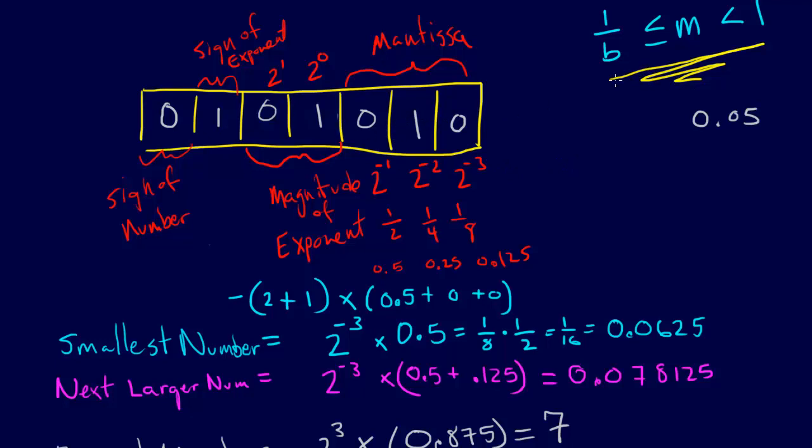And what happens as we keep doing this is the best we're going to get is going to be this value that we showed before. You just keep going through this process of bumping the mantissa up 1, and bumping up the exponent up 1, until you get to a number such that the magnitude of the mantissa is between 1 over the base and 1.